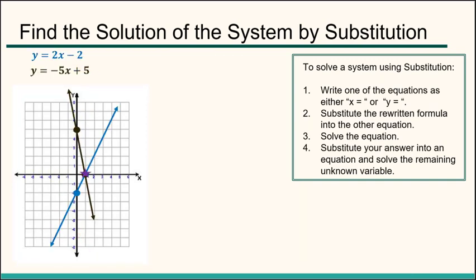This is another system that we solved last lecture and we did it using graphing. So we already know what the answer is. The answer is x equal 1, 0 or the point 1, 0. We're going to solve this using substitution because we're going to learn several different methods.